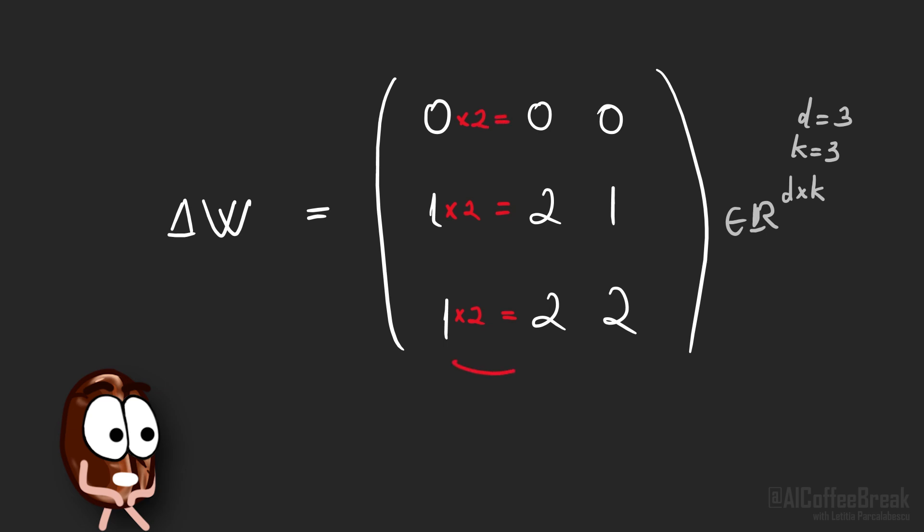Now, every matrix has a rank, which is a number counting how many linearly independent columns the matrix has. Linearly dependent means that we can get that column by combining other columns from the matrix. And if we remove linearly dependent columns from the matrix, we reduce the matrix dimension, but without losing information.